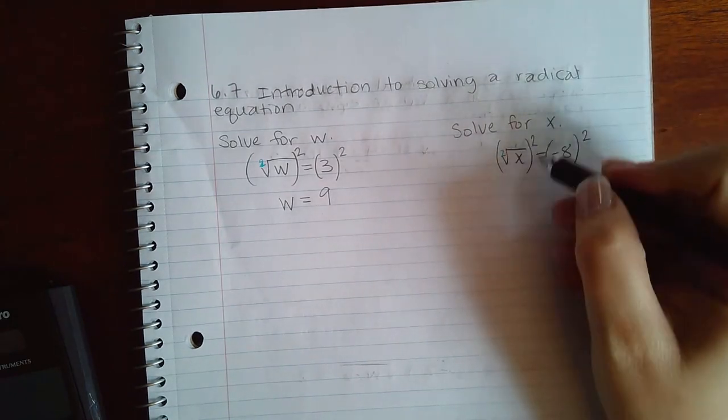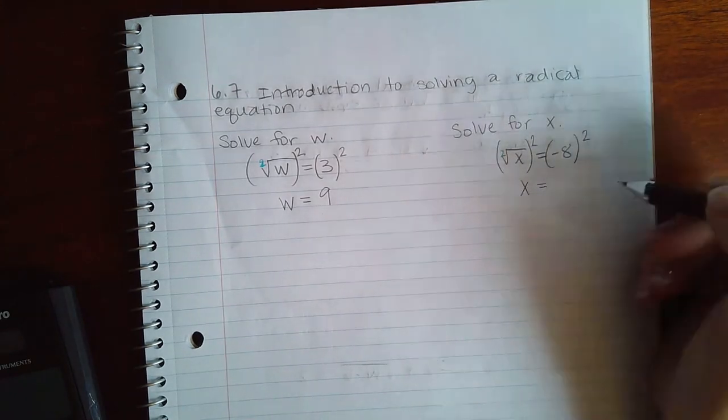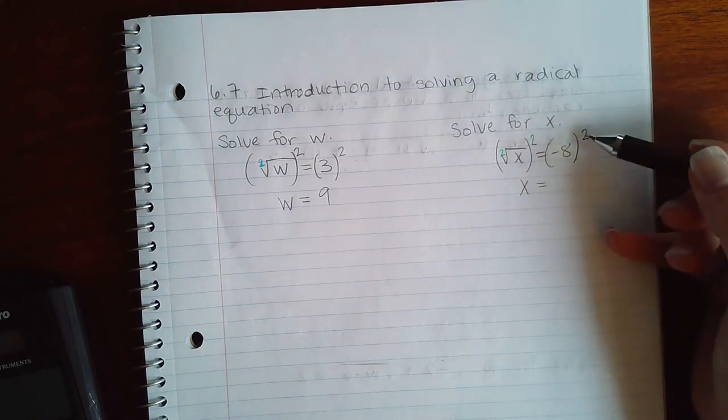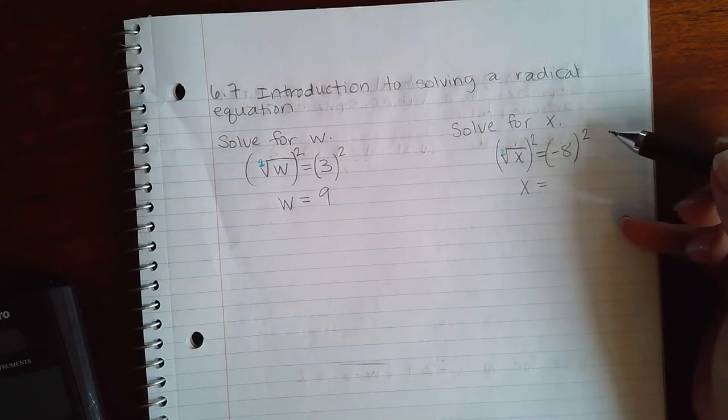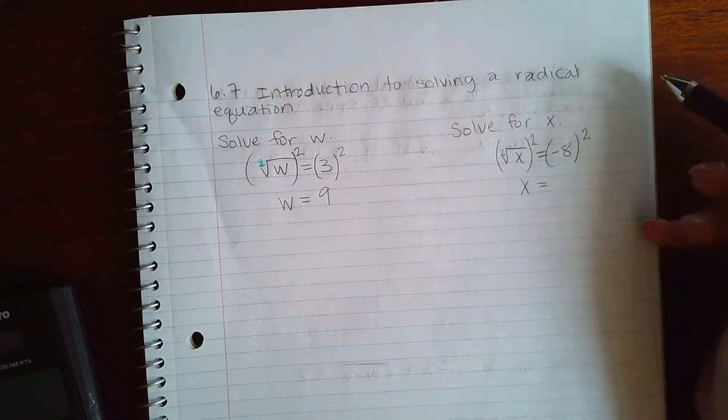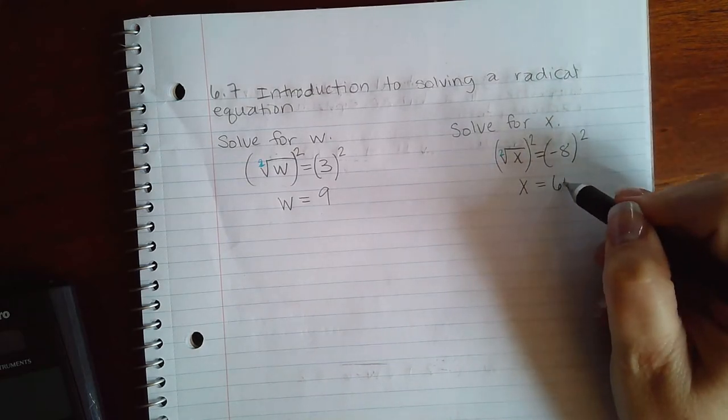But this is negative 8 squared, which means negative 8 times itself, another negative 8. But negative 8 times negative 8 is a positive 64.